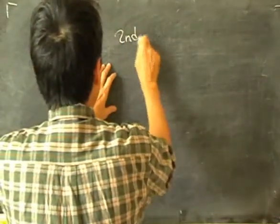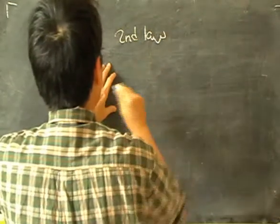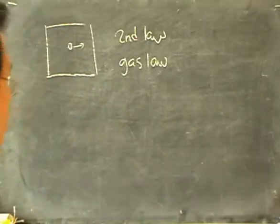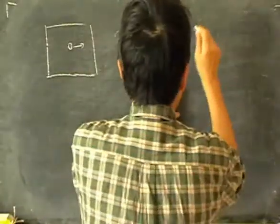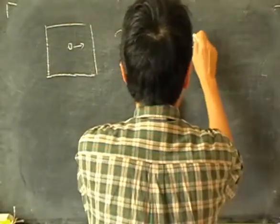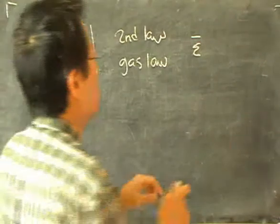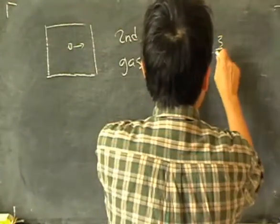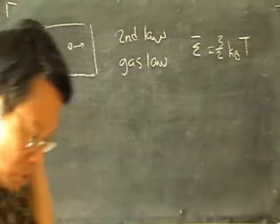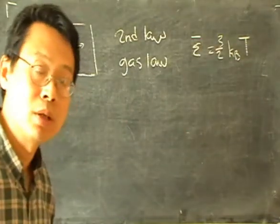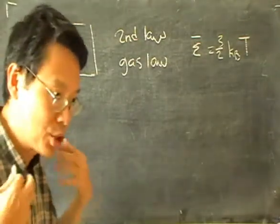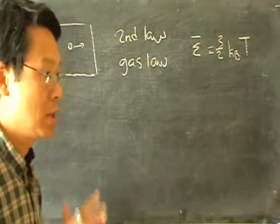So using Newton's second law together with the ideal gas law, this classical picture of the Kinetic Theory will give us an average energy for each particle which is equal to 3/2 k_B T. This is just a quick review of what we already know, and what we want to now explain and understand using statistical mechanics.